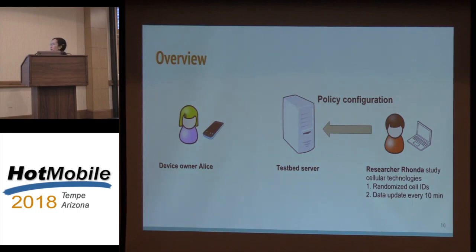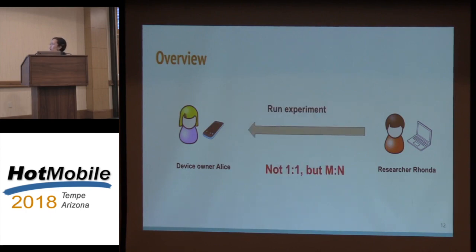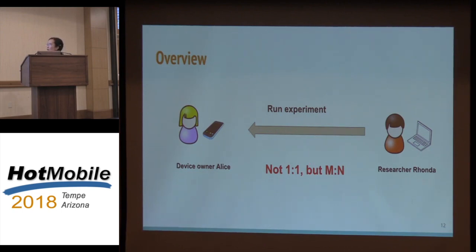After this, Rhonda goes to our testbed server and fills out a form indicating which configuration she needs for IRB compliance. After she fills out the form, the testbed server pushes all the policies to the end-user devices, such as Alice's. We will then be able to have Rhonda run the experiment directly on the device. This shows a one-on-one relationship, but it doesn't have to be — a researcher can run code on many devices, and the same device can host different experiments for different researchers.